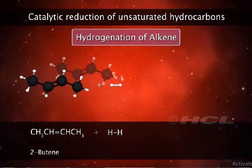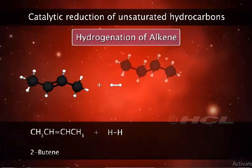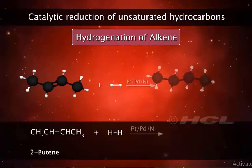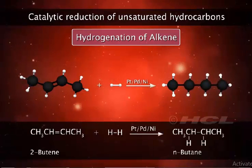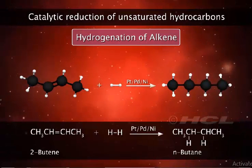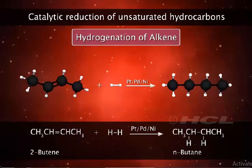Dihydrogen, H2, combines with unsaturated hydrocarbons in the presence of catalysts to form alkanes. This process is called hydrogenation.